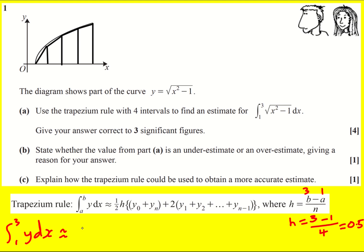So for us using four intervals we've got a half times 0.5 then y0, the last one's going to be y4 and then two times the rest.